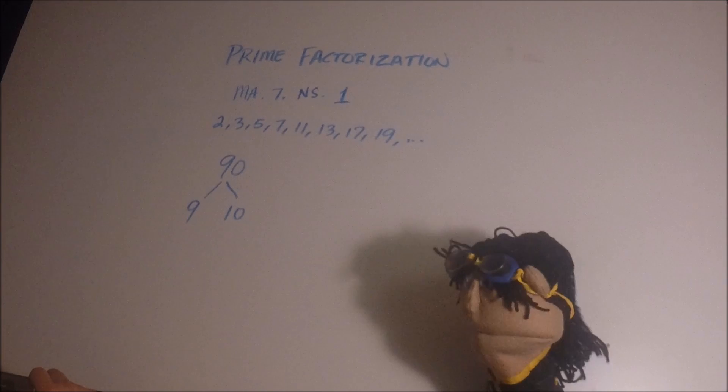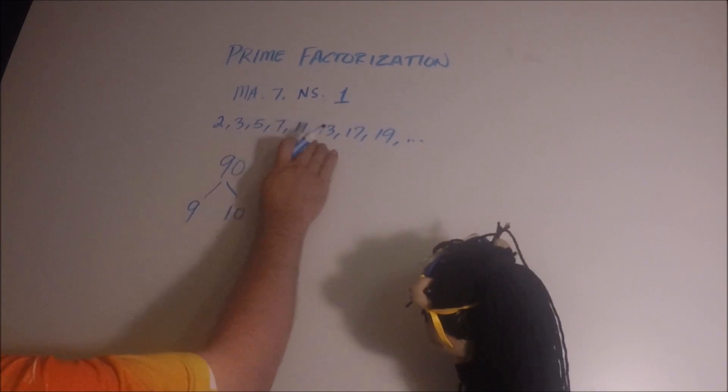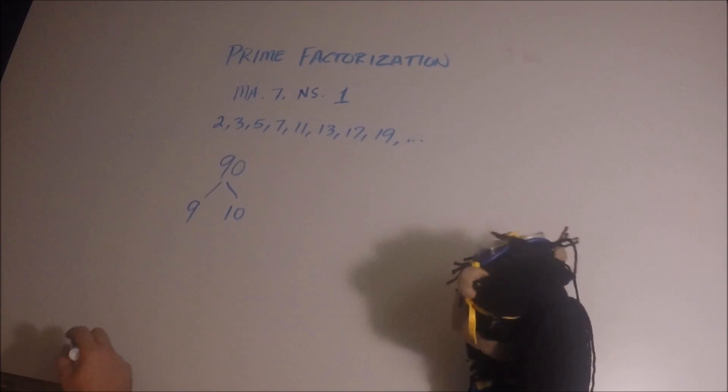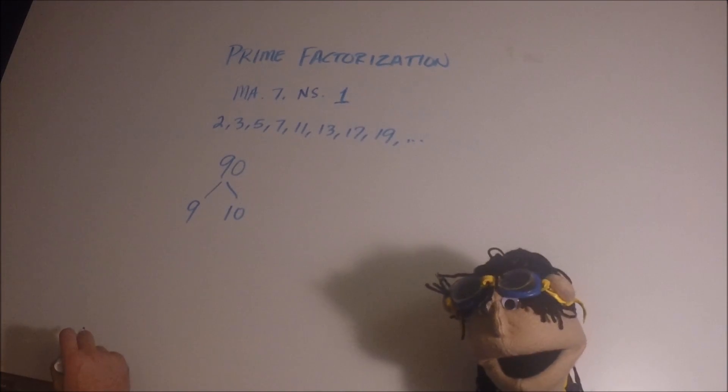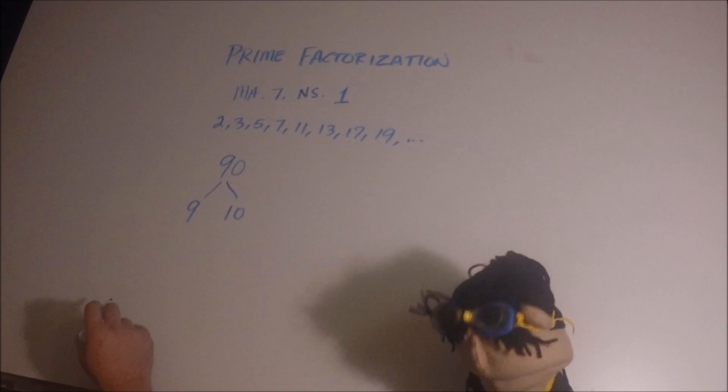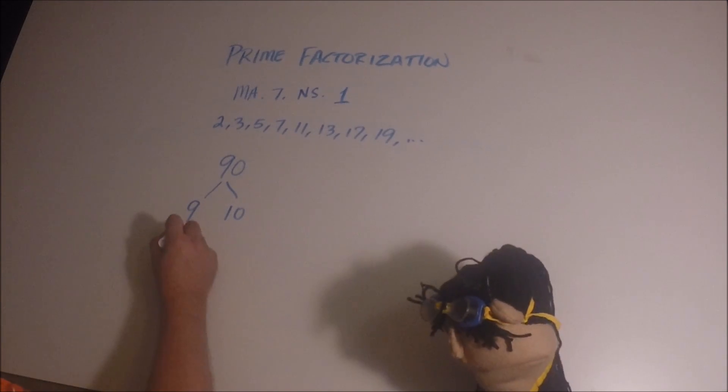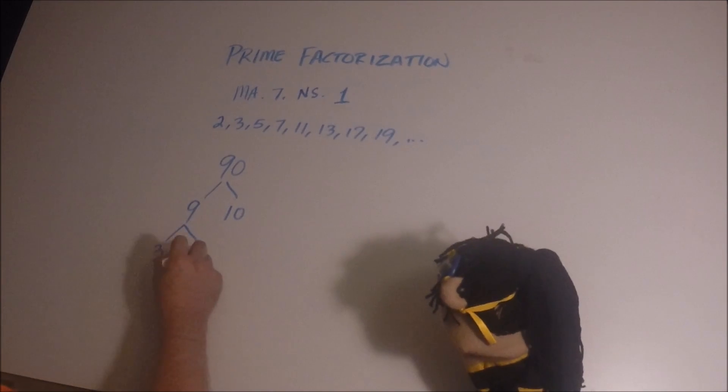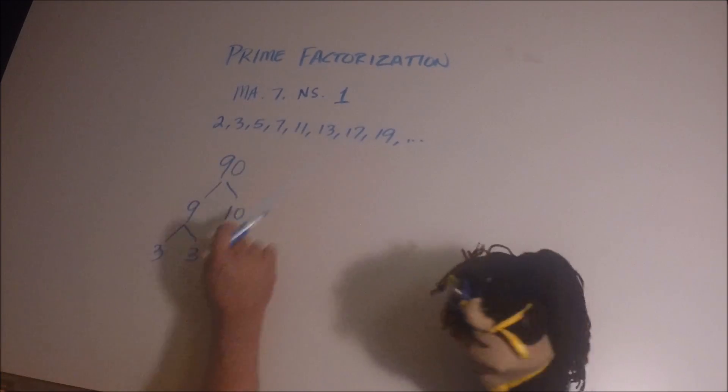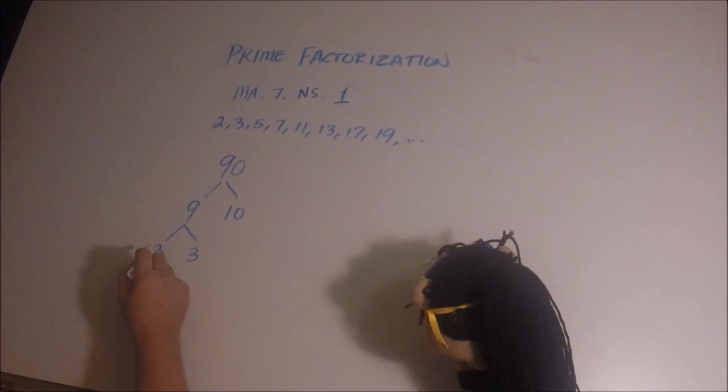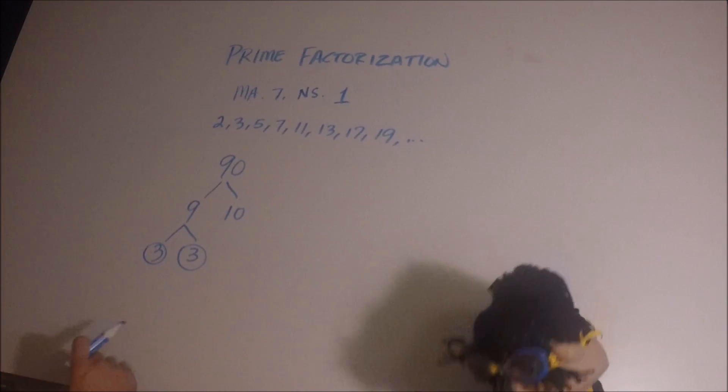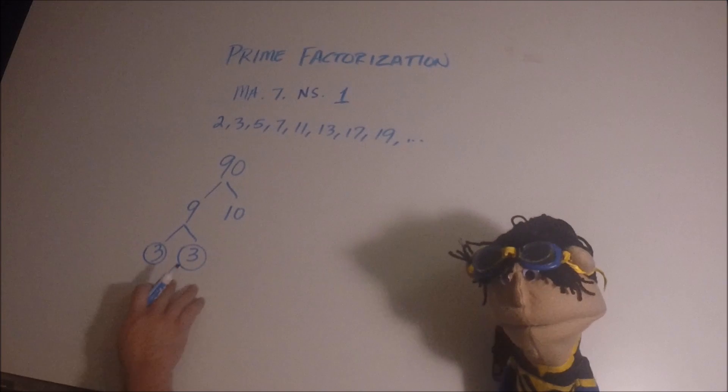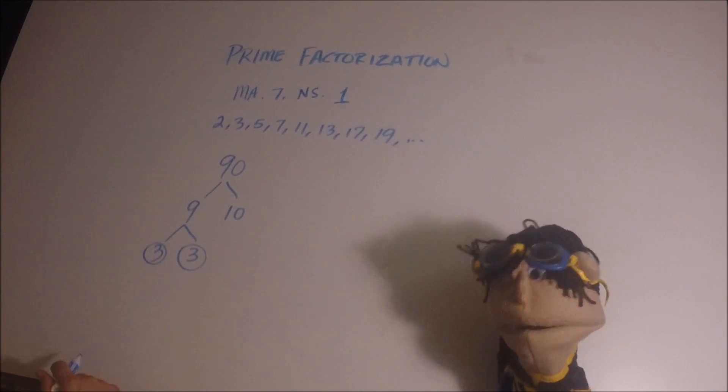So we have 9 and 10. Are those numbers prime? Nope, they're not part of our prime number list so we have to keep breaking them down. What makes 9? What two numbers multiply to make 9? 3 and 3. Good. So if we break down 9 into 3 times 3, are those numbers part of our prime number list? Yep, they're right here. So knowing that they're prime numbers, we'll circle them to let us know that those numbers are done. We could break them down into 1 times 3, but 1 goes into anything so that's not very useful to do.